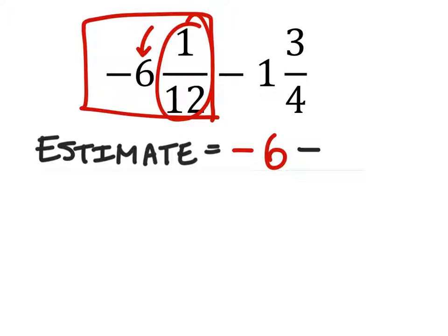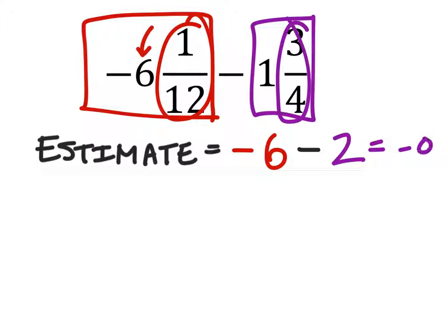And then we'll subtract. Looking at this 1 3/4, that's closer to 2 than 1 because 3/4 is more than 1 half. So I got negative 6 minus 2 which would give me a negative 8.